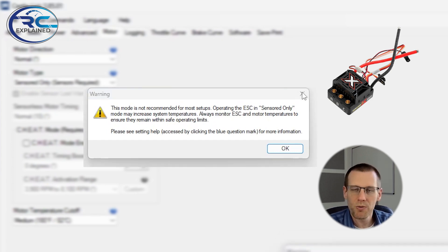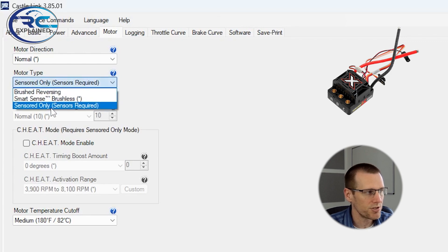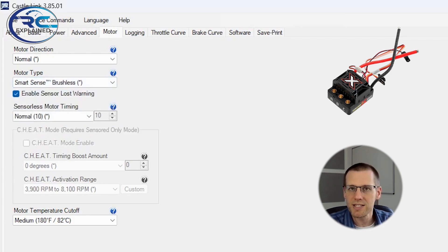So the best setting to always select for your system is to just choose smart sense. In this case, it might be called something different for your electronic speed control, but you get the idea, make that selection and things are going to turn out a lot better for you and for your system.